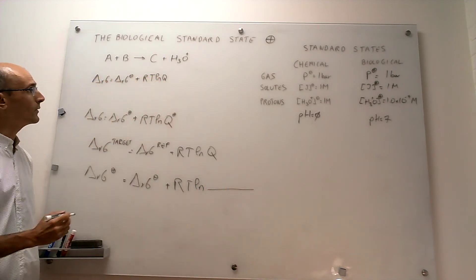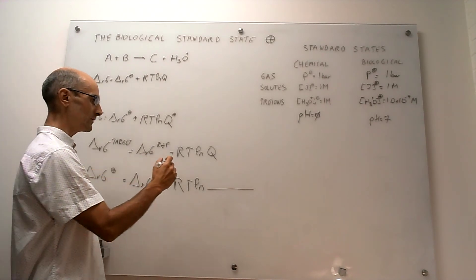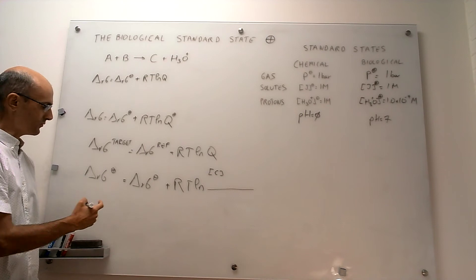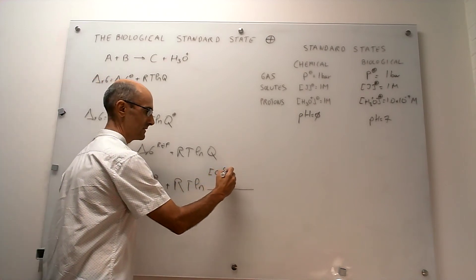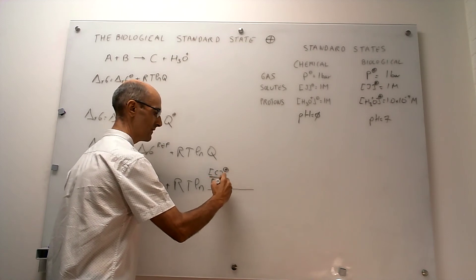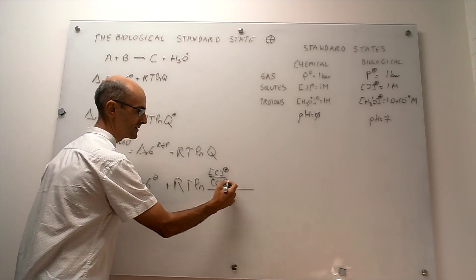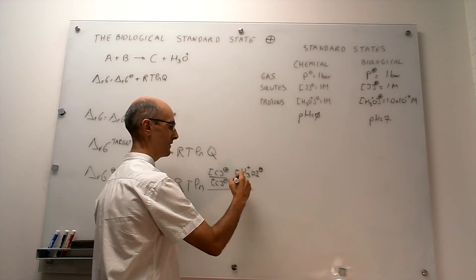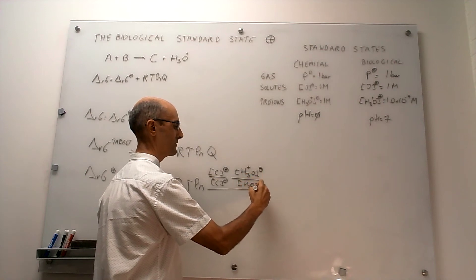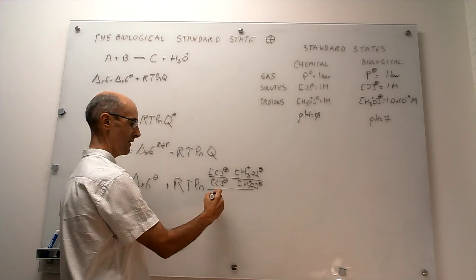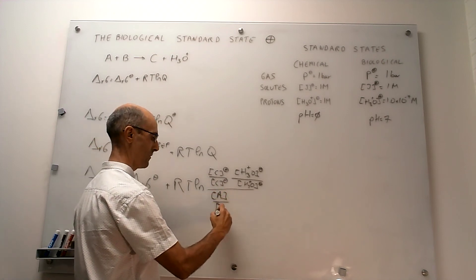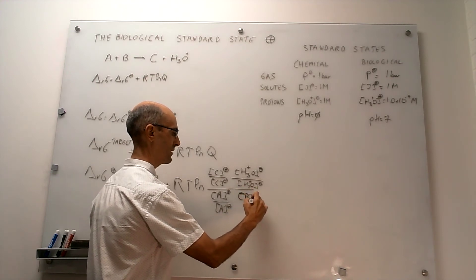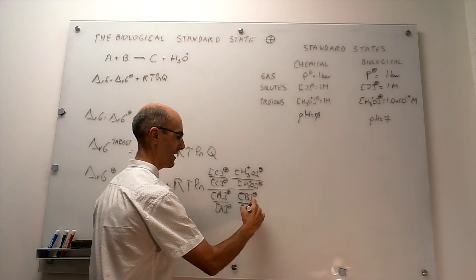We take the approach of using this reaction. Q is the concentration of C at your target concentration — in this case the biological standard state — divided by the concentration of that species at the reference state, which is the chemical standard state. The same applies for the rest of the species: protons at the target over protons at the reference, and then the reagents, with target concentration over reference concentration.